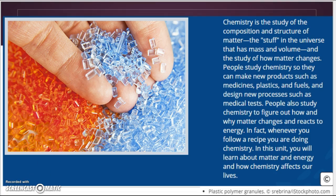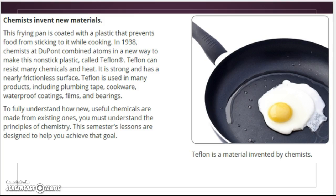Chemists invent new materials. This frying pan is coated with a plastic that prevents food from sticking to it while cooking. In 1938, chemists at DuPont combined atoms in a new way to make this non-stick plastic called Teflon. Teflon can resist many chemicals and heat. It is strong and has a nearly frictionless surface, so things slide right off. Teflon is used in many products, including plumbing tape, cookware, waterproof coating, films, and bearings. To fully understand how new, useful chemicals are made from existing ones, you must understand the principles, or how chemistry works.